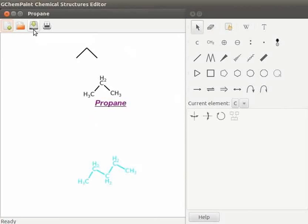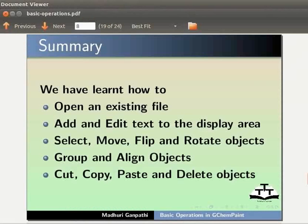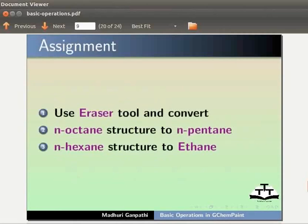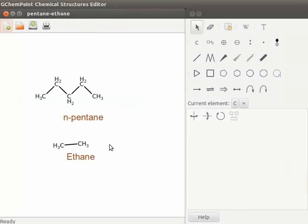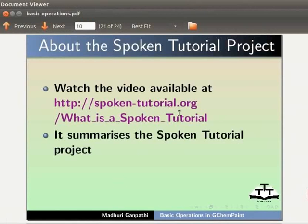With this we come to the end of this tutorial. Let us summarize. In this tutorial, we have learnt how to open an existing file, add and edit text to the display area, select, move, flip and rotate objects, group and align objects, and cut, copy, paste and delete objects. As an assignment, use Eraser tool and convert N-octane structure to N-pentane and N-hexane structure to Ethane. The output of assignment should look like this.